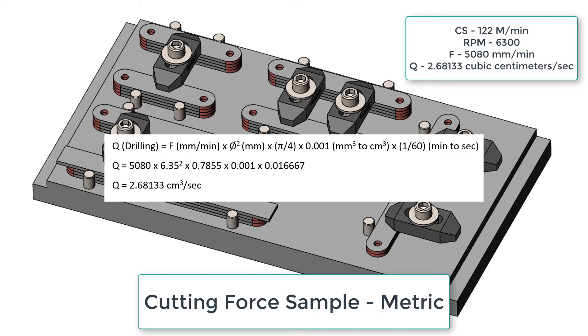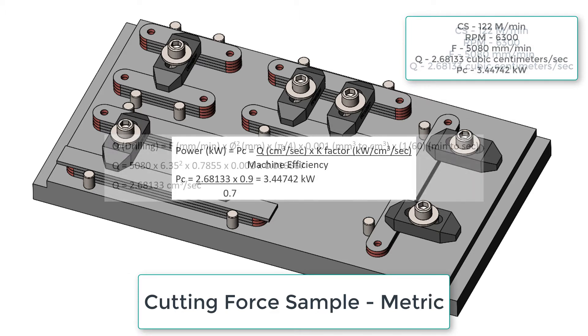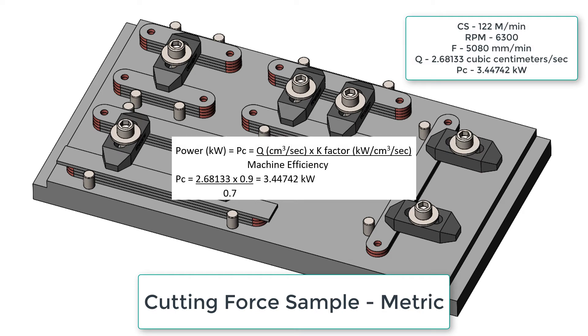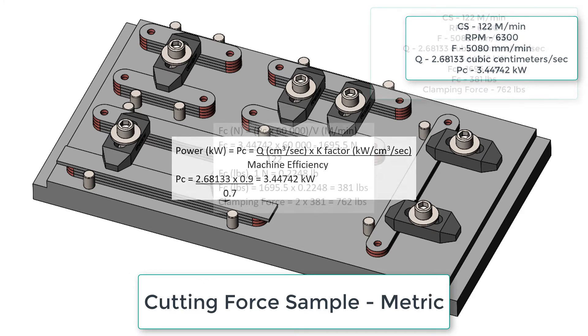Therefore we find for this part we remove 2.68133 cubic centimeters per second with our drill. Next we need to calculate the power required to drill our hole. To do this we're going to multiply the volume of material removed in cubic centimeters per second times the K factor and then divide by the machine efficiency. In this case we find we need 3.447 kilowatts to drill our hole.